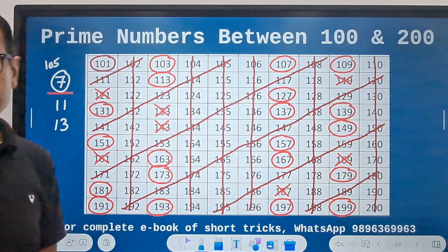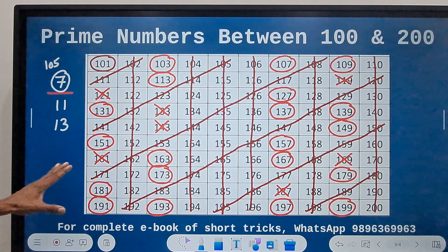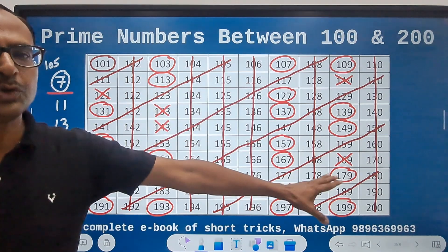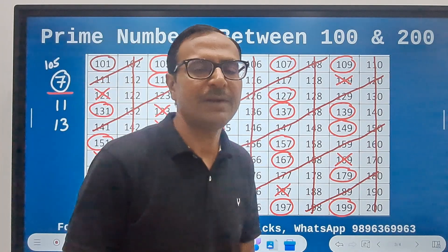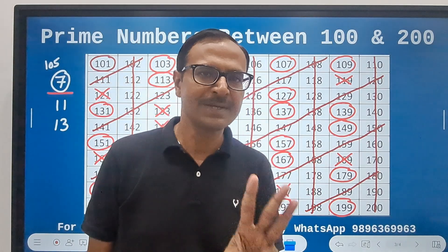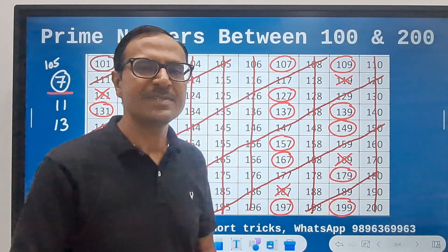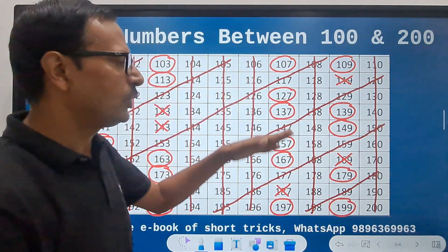And there we go. These are the 21 prime numbers between 101 and 200. Now see, the process is not at all difficult. It involves just three steps, and you get to all the prime numbers between 100 and 200 also.